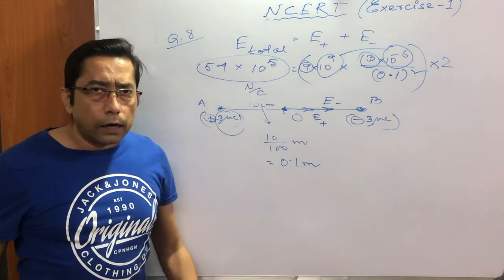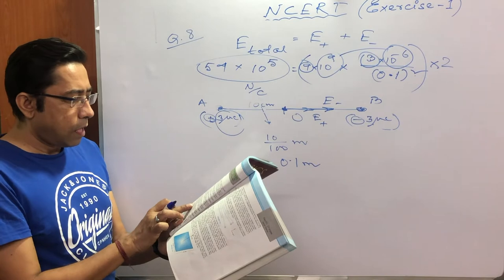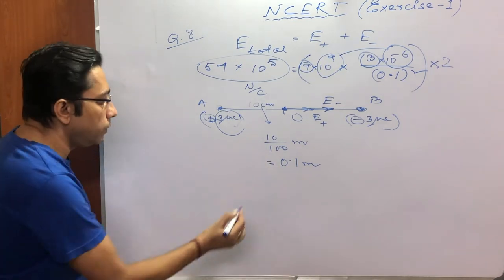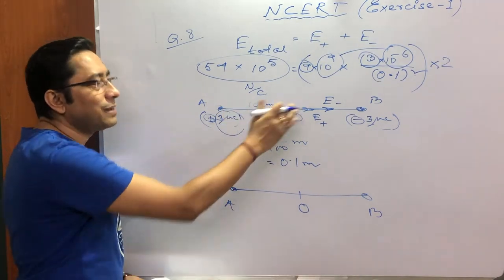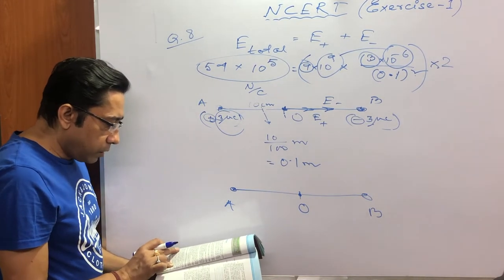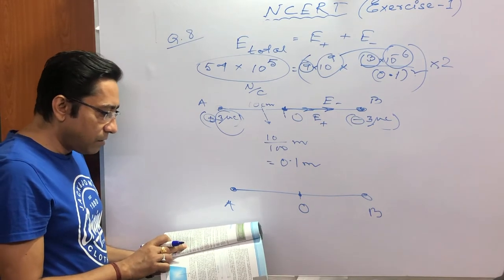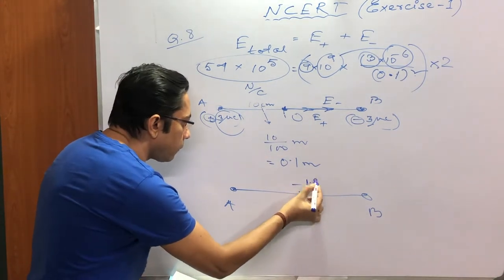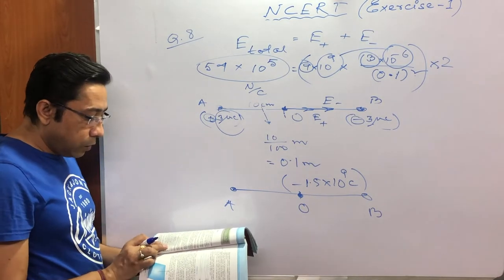So that is the electric field. Now another part is there: what should be the force acting on a test charge of magnitude 1.5 into 10 to the power minus 9 Coulomb? That means they have asked what would be the force placed at O. I am again drawing O because this has become a little clumsy. If we place another charge at O of the value, this is the problem, 1.5, 10 to the power minus 9 Coulomb. So let us put a charge, but it is said that it is negative, so minus 1.5, 10 to the power minus 9 Coulomb.